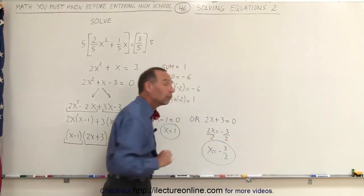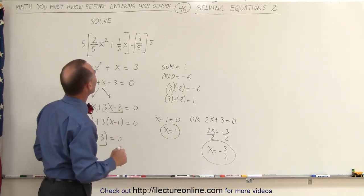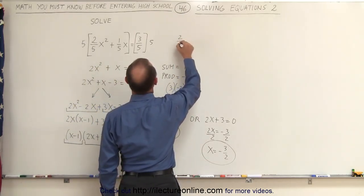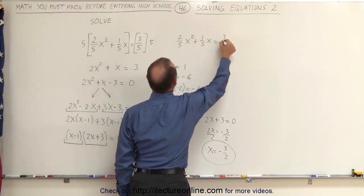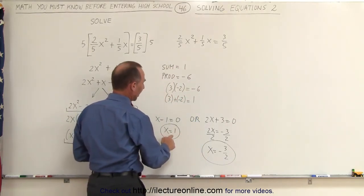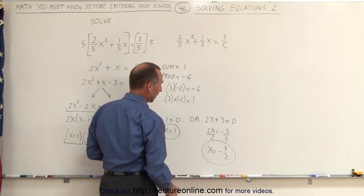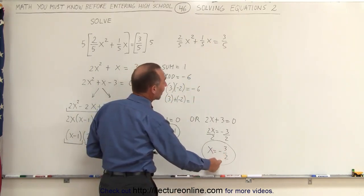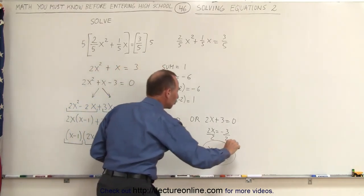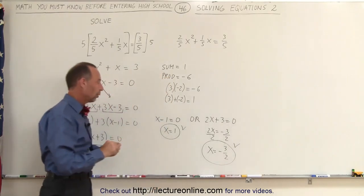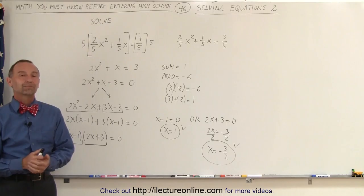That means either one of the two will solve this original equation. Of course, we kind of changed the original equation. Let's rewrite it again. We have (2/5)x² + (1/5)x = 3/5. Notice that if we plug in the value of x = 1, we get 2/5 + 1/5 = 3/5. That's correct. And if we plug in x = -3/2, again, we should get the left side equal to the right side. So these are the two solutions to our original equation. Either x = 1 or x = -3/2. And that's how it's done.